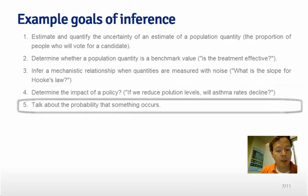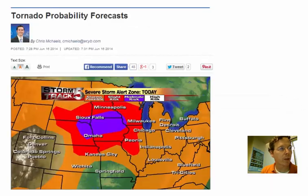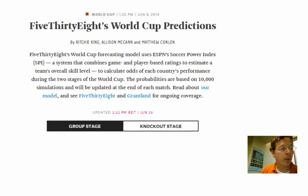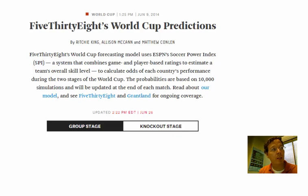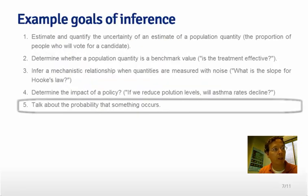Finally, whenever anyone talks about the probability that something occurs where they've estimated that probability from data, they're making an inference — they're talking about a population probability. That is something that we need to have a formal framework around. If you ever use the word probability, you need to know the topics in this class.